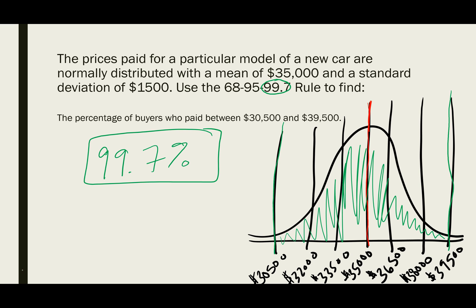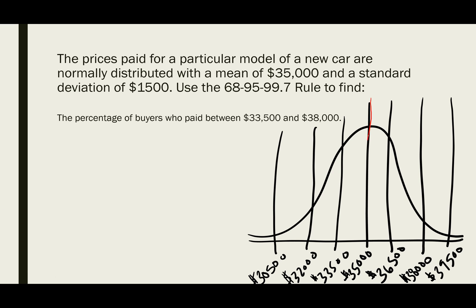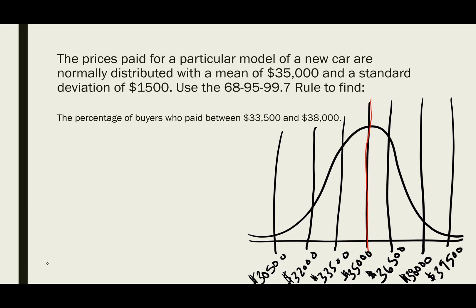Let's look at another one. I'll highlight the mean, and then look at the data values between $33,500 and $38,000. For the first time, we're not symmetric — we have minus one standard deviation on one side and plus two standard deviations on the other. So we can't use the rule directly to get our answer.